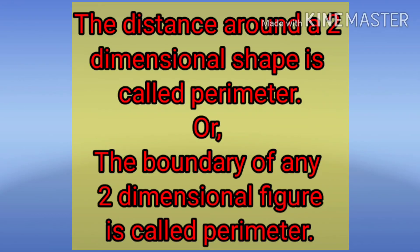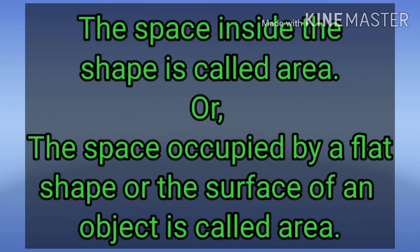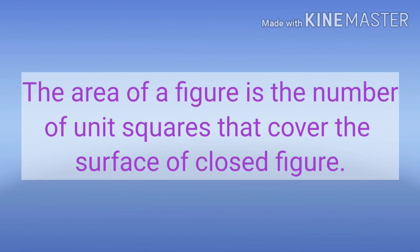Dear students, the distance around a two-dimensional shape is called perimeter. You can also say that the boundary of any two-dimensional figure is called perimeter. The space inside the shape is called area. You can also say that the space occupied by a flat shape or the surface of an object is called area. The area of a figure is the number of unit squares that cover the surface of a closed figure.